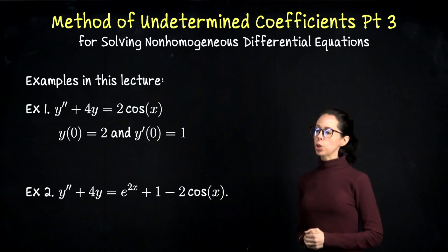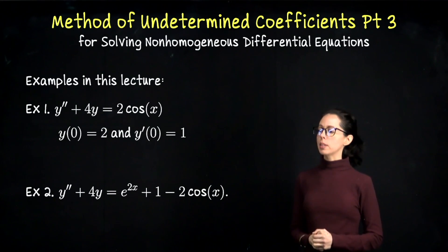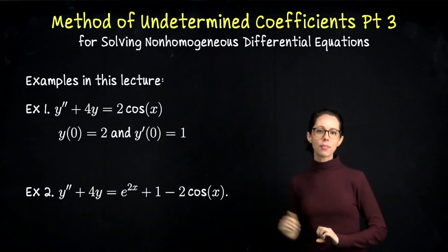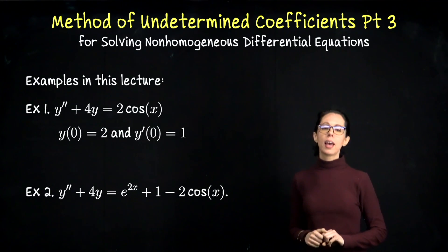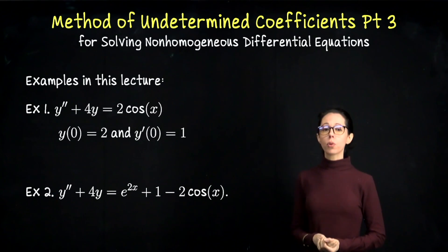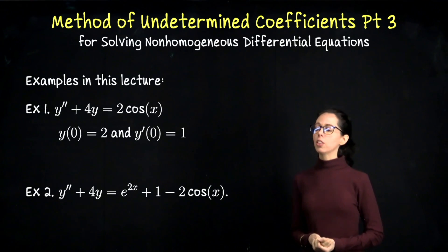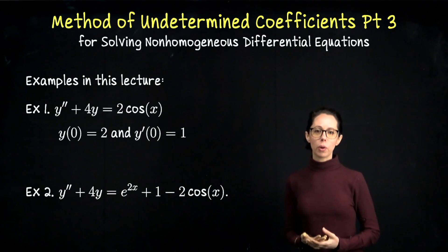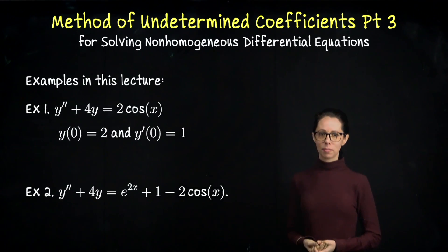In example two, we're going to have almost the same equation with the same left-hand side, and we will make a modification on our forcing function and look at how to do example two most efficiently, given that we'll have already worked through example one.